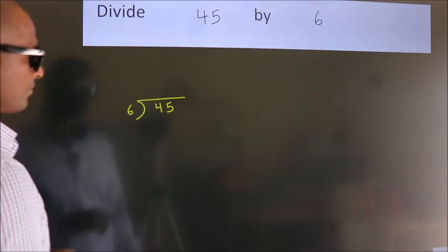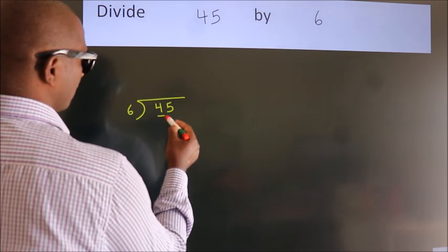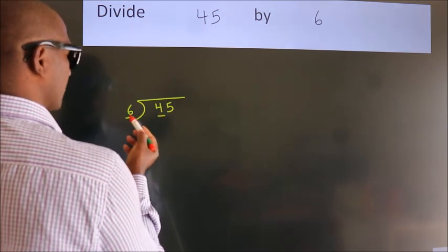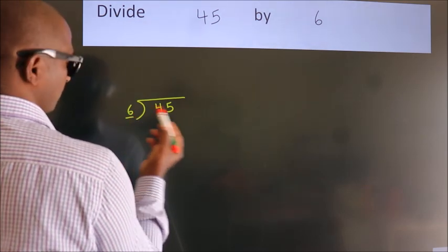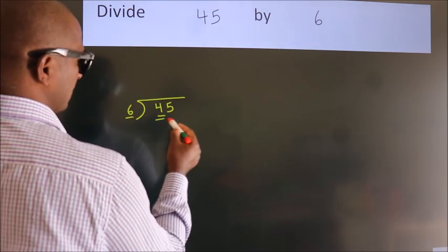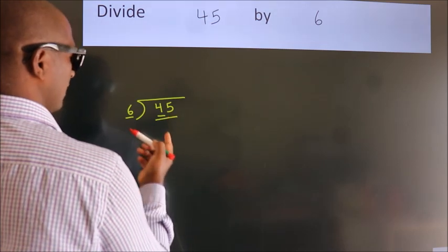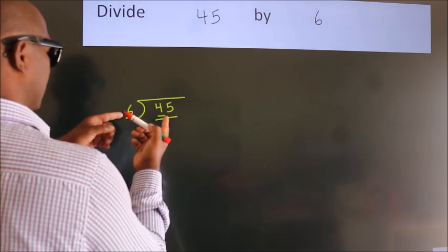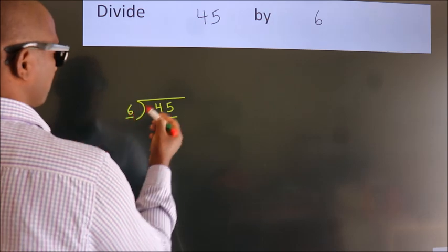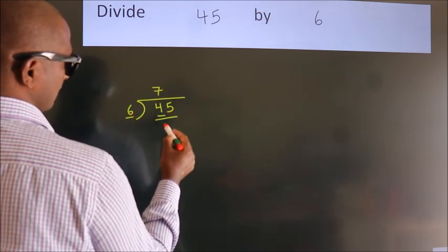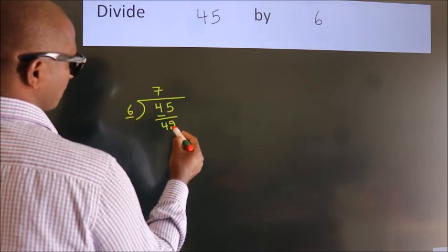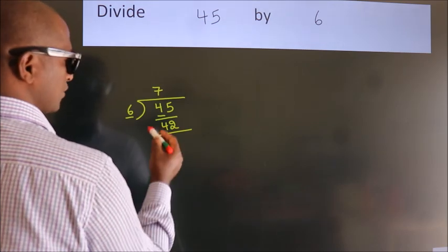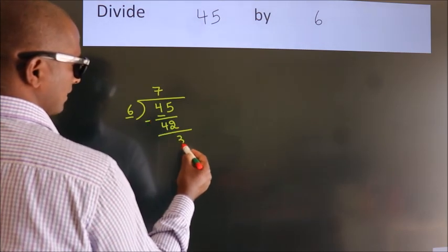Next, here we have 4, here 6. 4 is smaller than 6, so we should take 2 numbers: 45. A number close to 45 in the 6 times table is 6 sevens 42. Now we should subtract. We get 3.